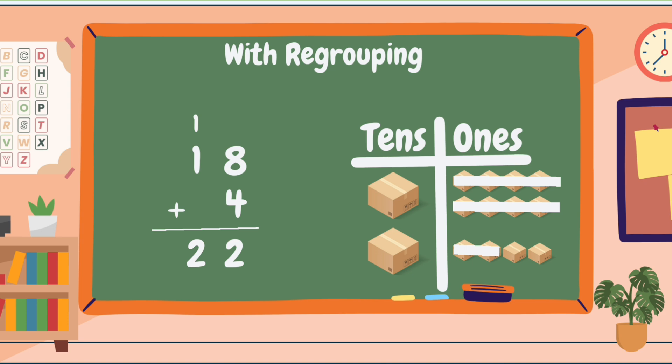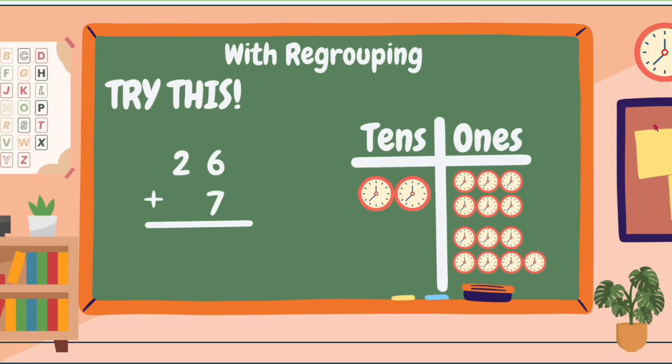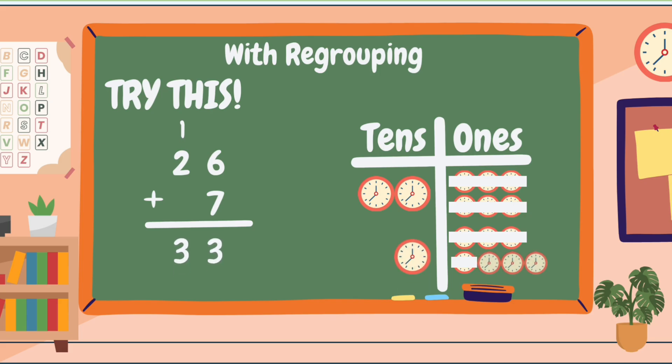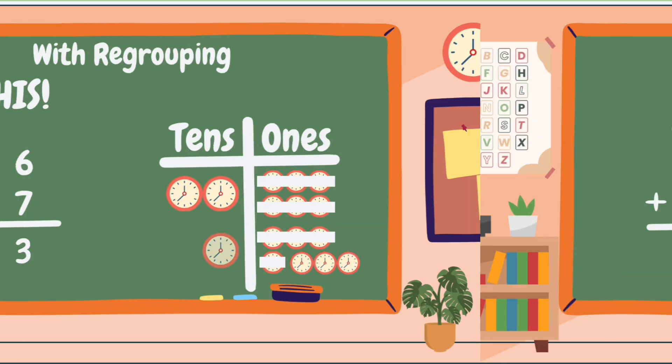Well done, children. Now you try this. Very good! 26 plus 7 equals 33.